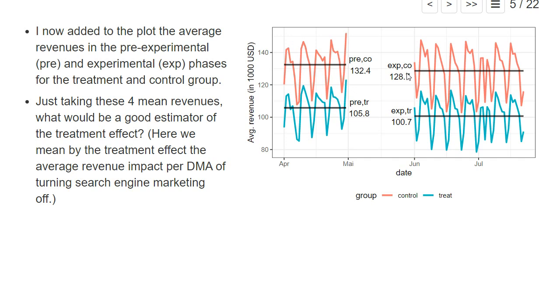These average revenues are the average daily revenues per DMA in the corresponding group. Now the question is, if we just take those four numbers, what would be a good estimator of the treatment effect? The treatment effect would be how much does the average revenue change in a DMA per day if we turn off completely the search engine marketing. How can we best estimate the treatment effect from those four numbers? First, make a guess in the quiz.